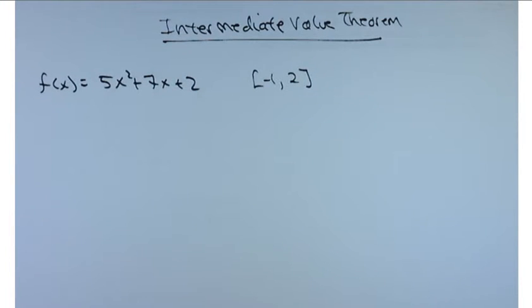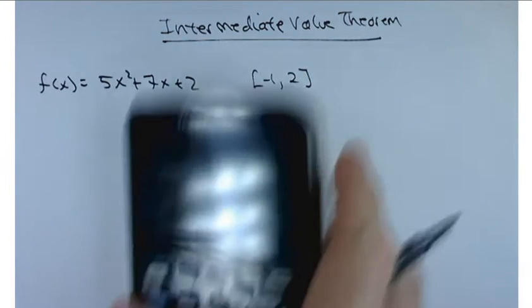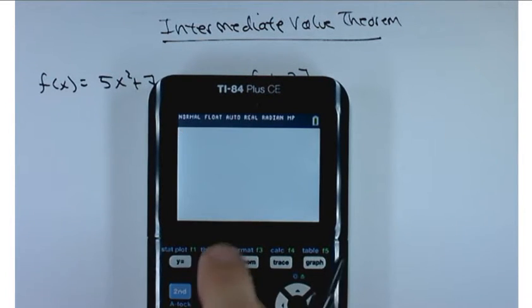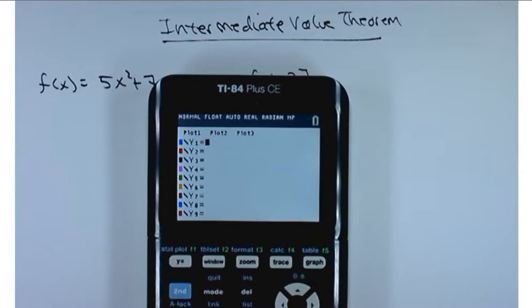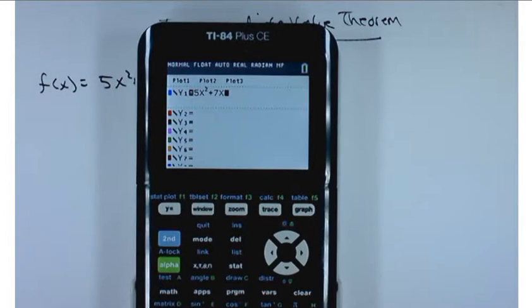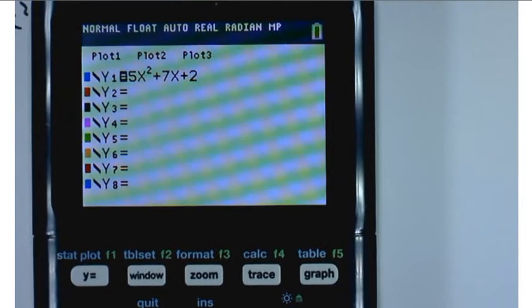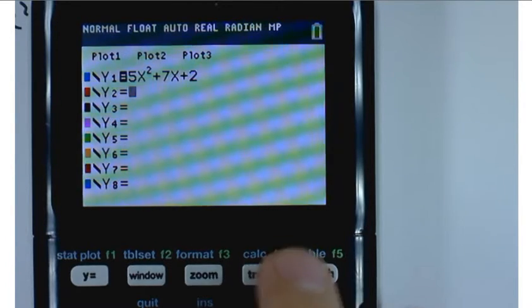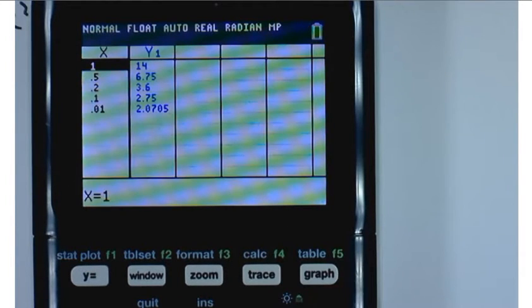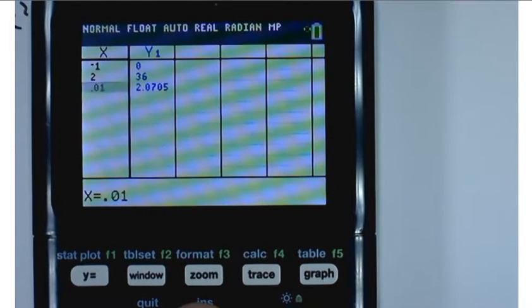So let's start by putting it into our graphing calculators. So y equals, and I want 5x squared plus 7x plus 2. And let's take a look at it using our table function. So once you've got the equation entered into your calculator, hit the second key, then the table function. Let's just look at it at those two points, at negative 1 and 2, the end points of that interval that I gave you.